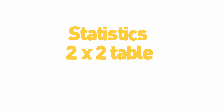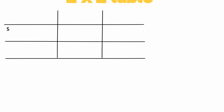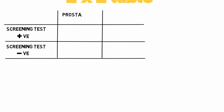Statistics: two by two table. Imagine a scenario where we've got a screening test for prostate cancer. The screening test can either be positive, or negative, and prostate cancer can be absent or can truly be there.